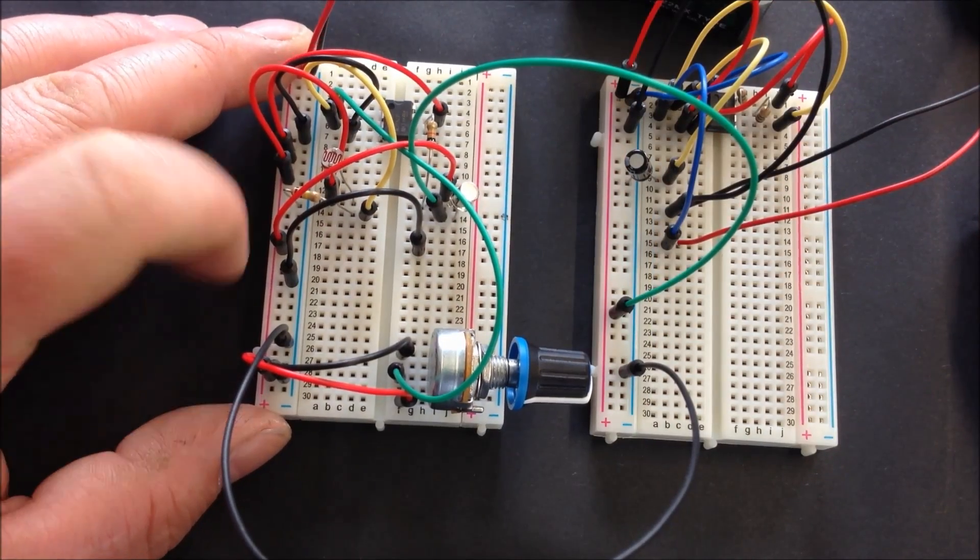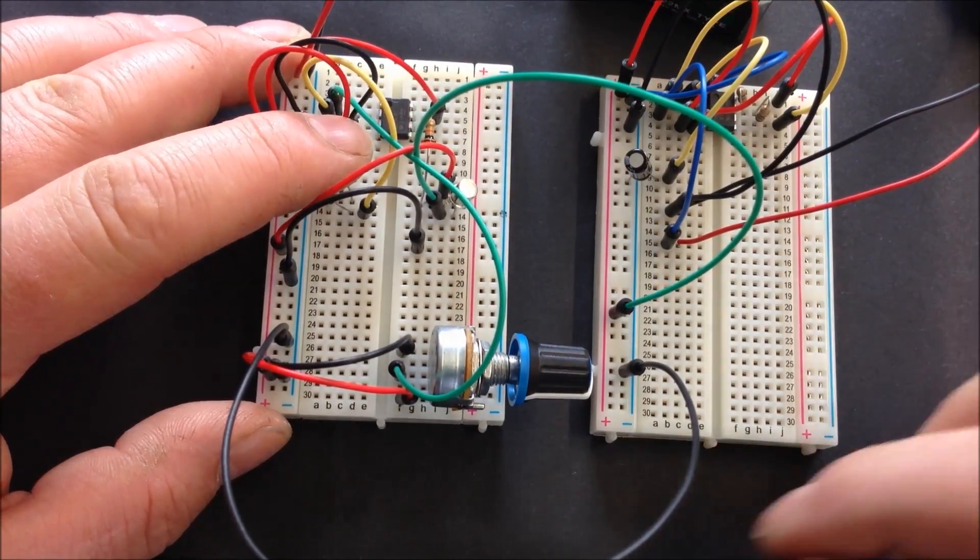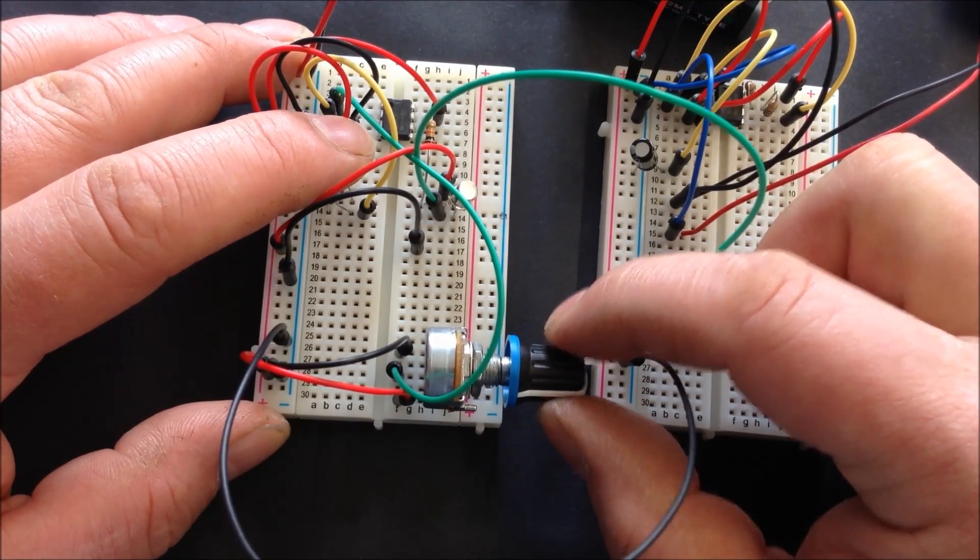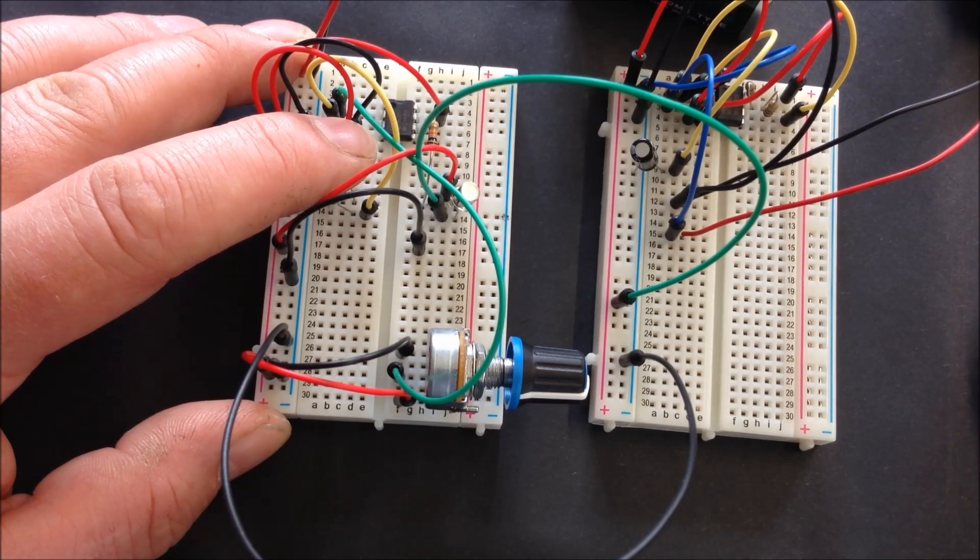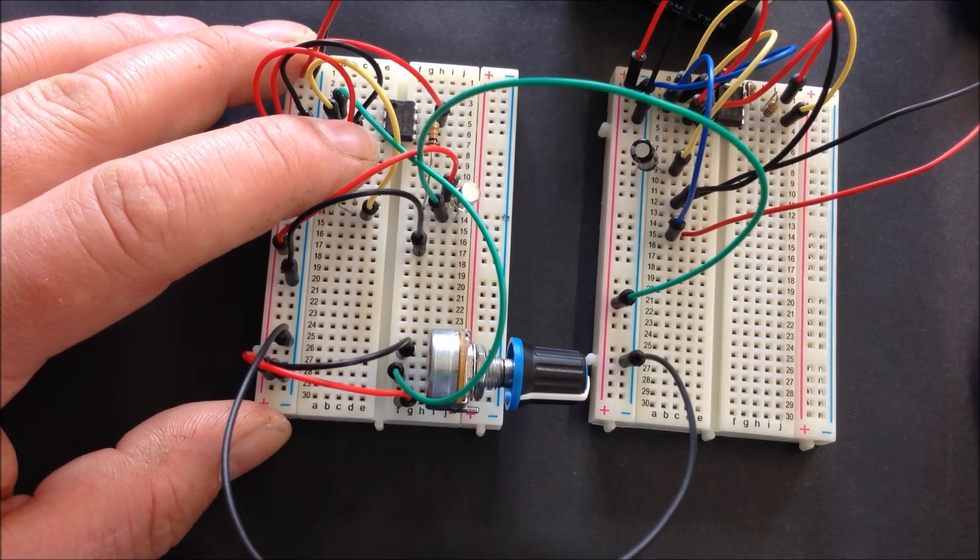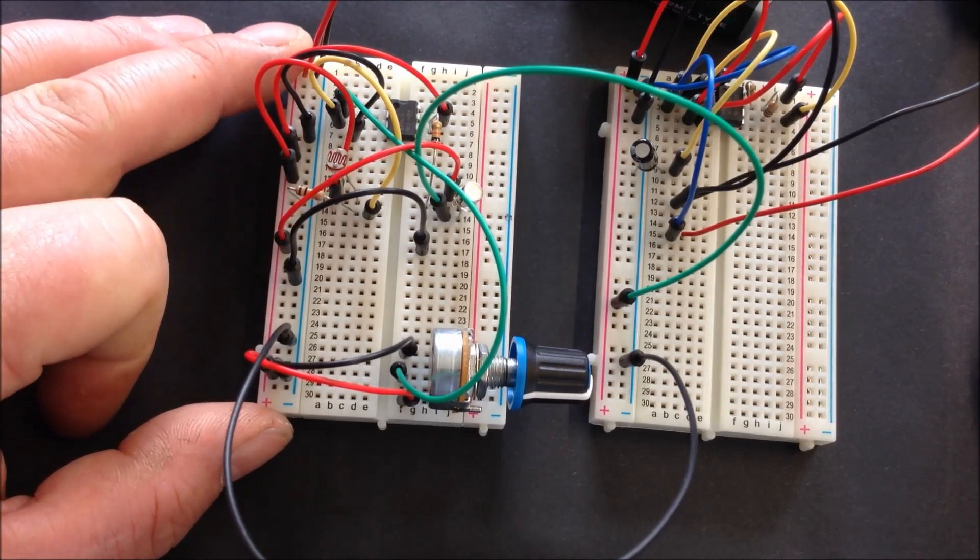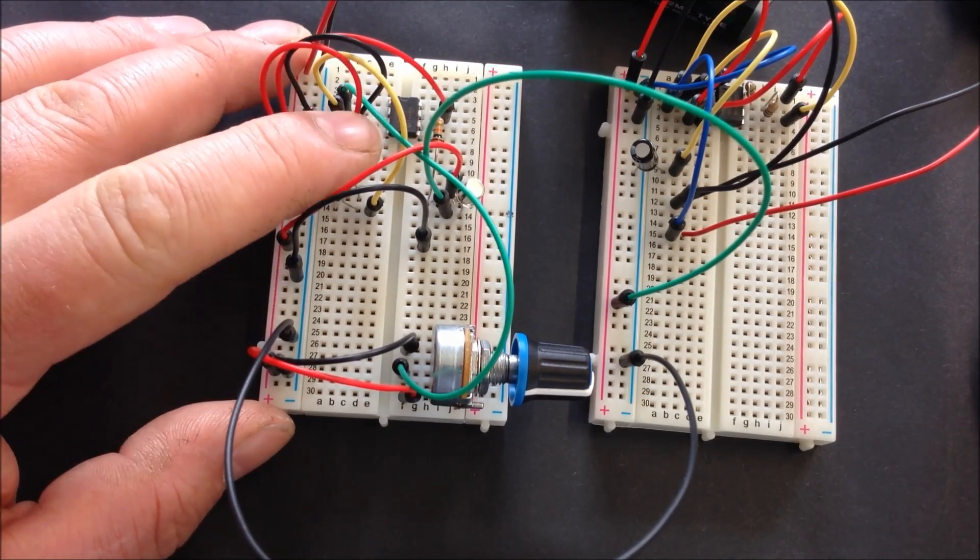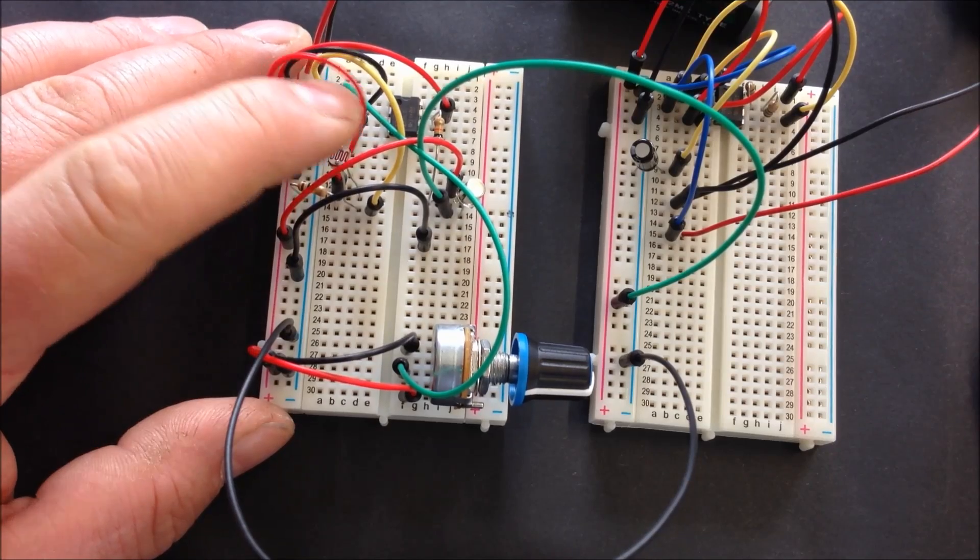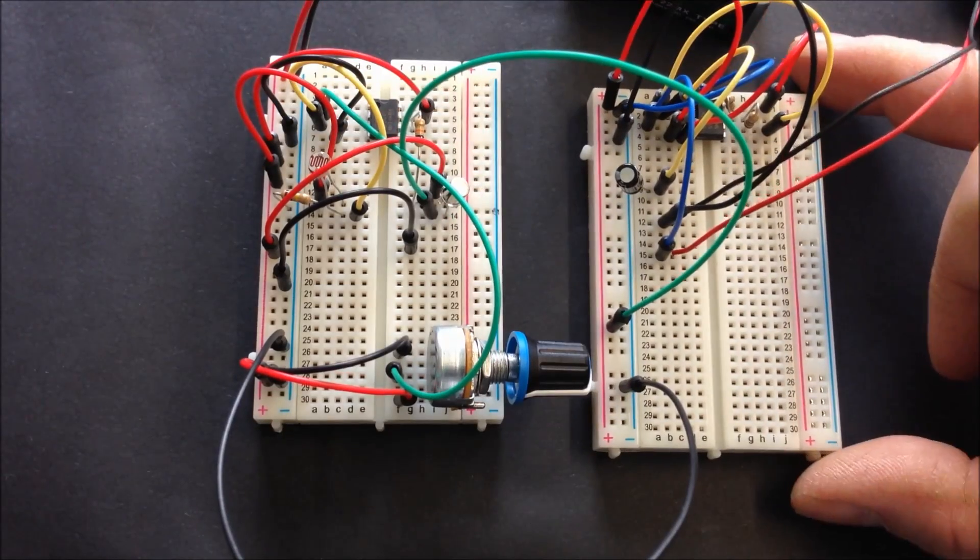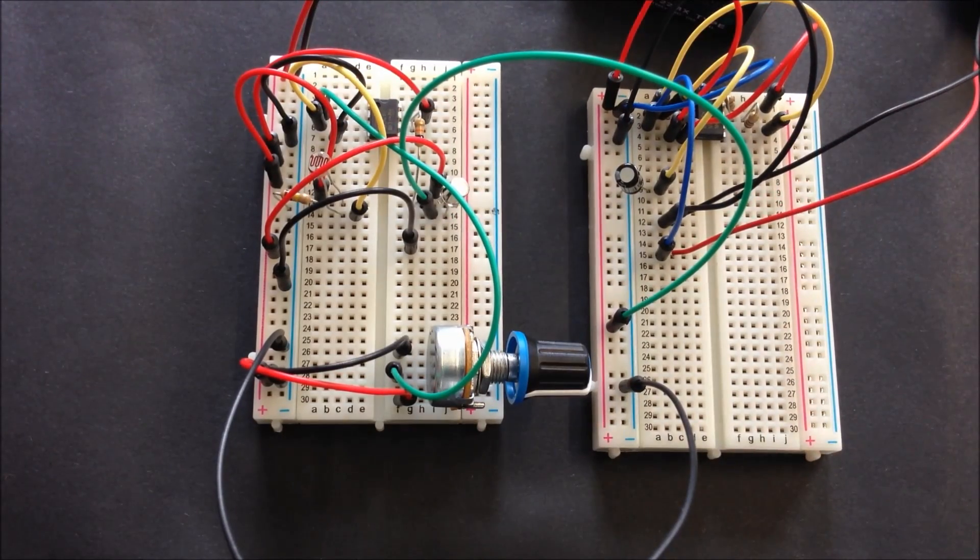There's no sound at the moment. So we'll cover our light dependent resistor so it thinks it's dark, and adjust the sensitivity until it just sounds and then stops. Then when we increase the light level by removing our finger. And there we are. What we've prototyped there is an alarm for when somebody opens your fridge.